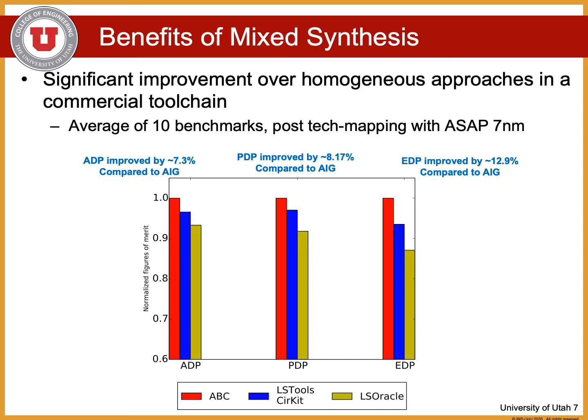This approach has proven benefits. The graph below shows LS Oracle and its mixed synthesis approach compared to using AIG alone or MIG alone. The graph is normalized to the AIG result and shows an average of 10 benchmarks selected from the OpenPiton design benchmark, OpenCores, and the EPFL benchmarks. All benchmarks were pre-processed and then passed into a commercial tool for technology mapping using the ASAP 7nm library. LS Oracle gives a 7.3% improvement in ADP, 8.17% improvement in PDP, and 12.9% improvement in EDP compared to AIGs. Significantly, the result is better than either AIG or MIG alone, demonstrating that improved performance is possible through a mixture of approaches.